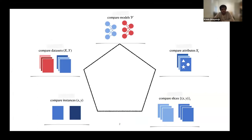The task of understanding dataset difficulty can be broken down into a set of more granular comparisons. One such comparison is comparing two models. Another is comparing datasets in their entirety. A third is comparing individual instances in the dataset. Fourth would be comparing different slices of the dataset, for example different classes. The last would be comparing different attributes of the input. Being able to conduct comparisons across all five facets is crucial to understanding dataset difficulty, yet the measures we typically use only allow one or two or maybe three of these comparisons.